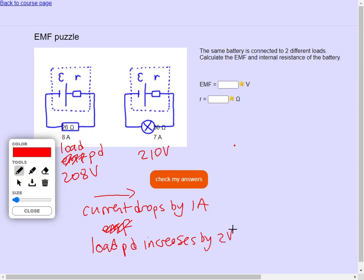So where did that 2 volts come from? Well it came from the lower current through the internal resistance of the battery. So in fact we must have an internal resistance of 2 ohms.